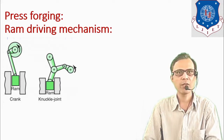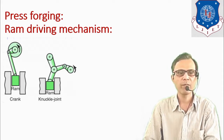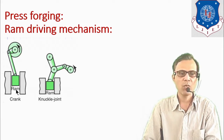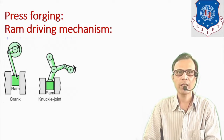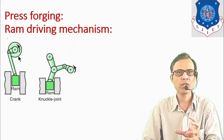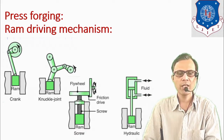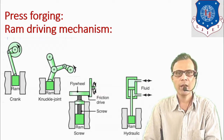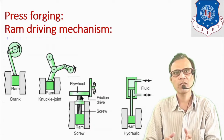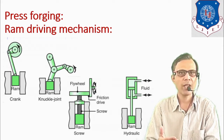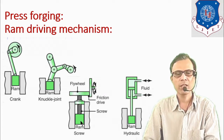Several driving mechanisms are used to provide reciprocating movement to the ram. Commonly used mechanisms include the crank type, where a crank and connecting rod convert rotary motion into reciprocating movement of the ram. Another mechanism is the knuckle joint type. Two more mechanisms are the screw type and hydraulic mechanism. In the screw type mechanism, a heavy flywheel stores energy temporarily and releases it to produce a sudden blow of the ram.